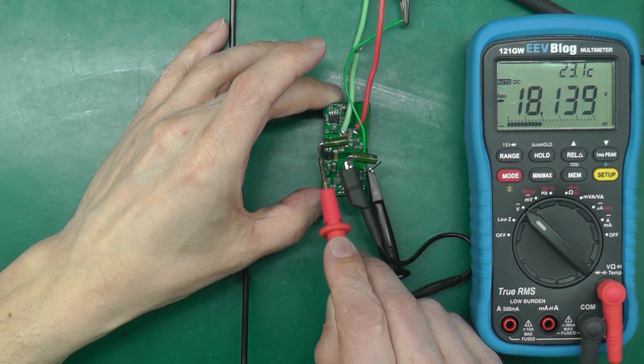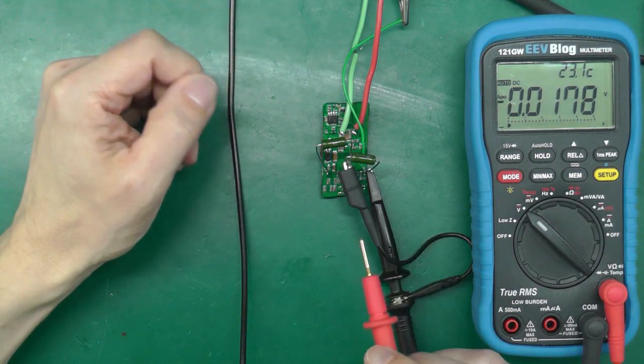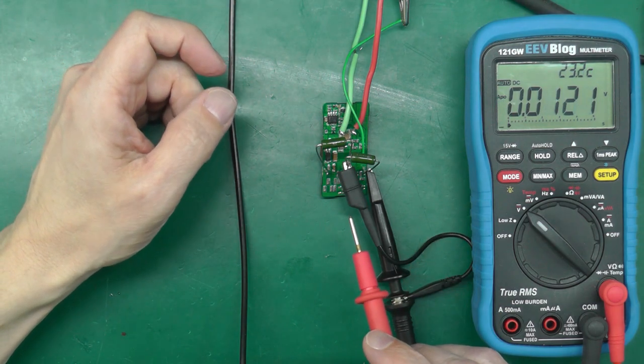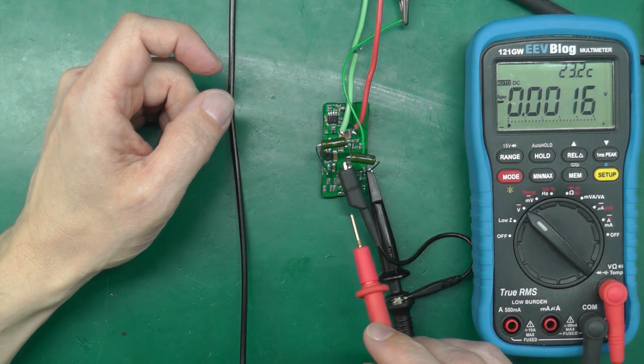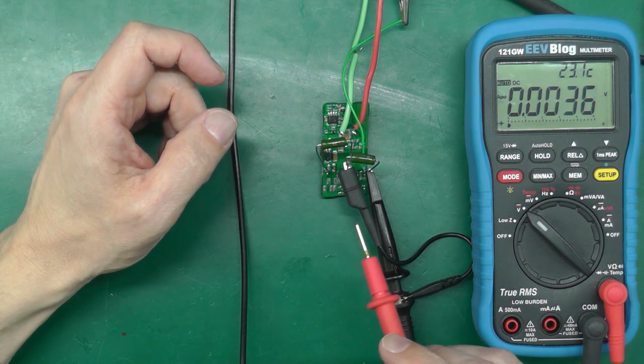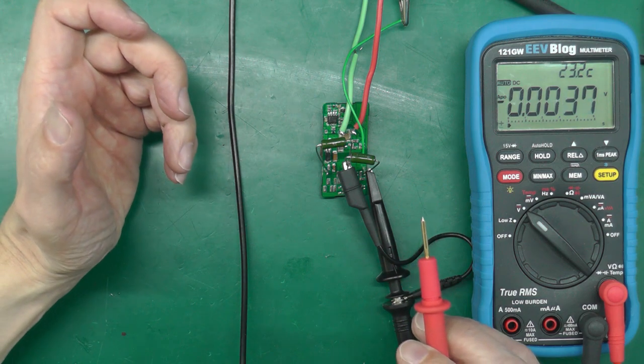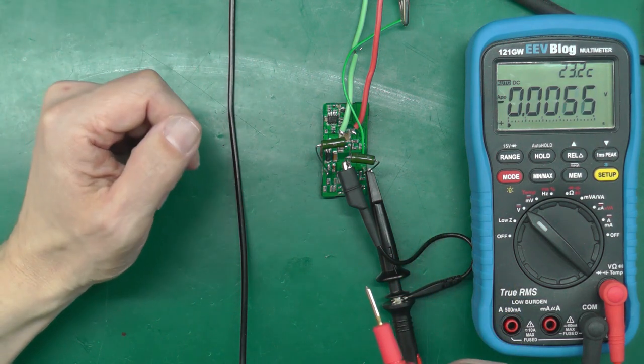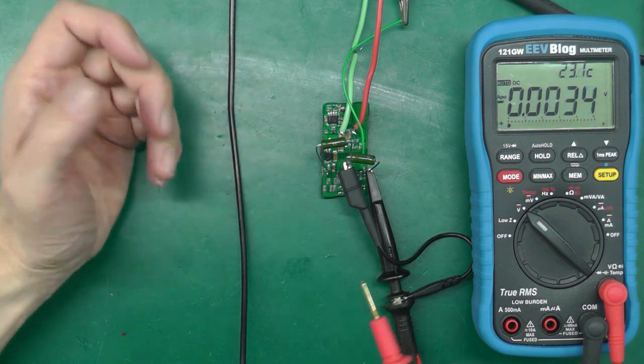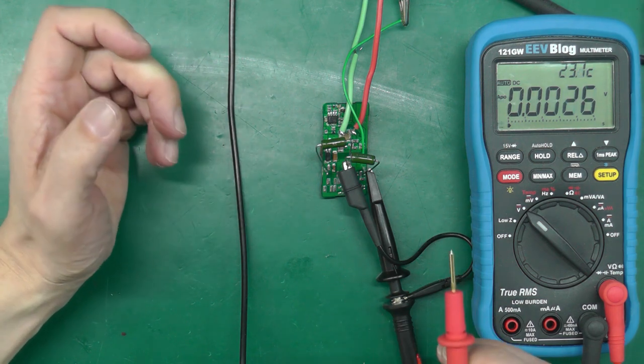So it certainly appears as though it's working. Obviously, I haven't really tested it under load right across the range. I need to look more at the datasheet for that because it just says it's 416 milliamps or whatever per rail, but it doesn't really tell you whether that's both rails at the same time.